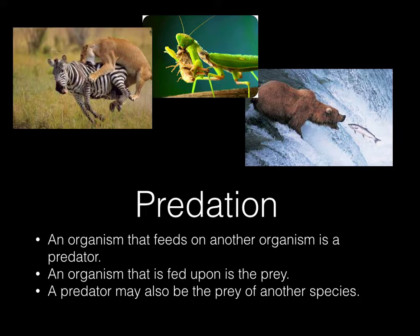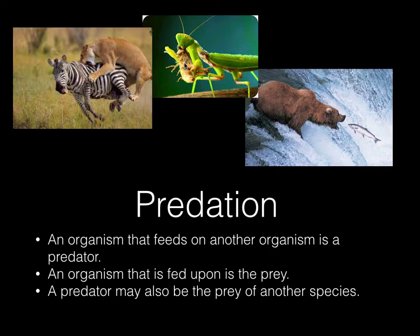Predation involves a predator and a prey. It's important to note that a predator can also be prey to another species, so this isn't a fixed label. Here we have a lion, which is an apex predator with little competition outside its own species — the lion is the predator, the zebra is the prey. Similarly, the bear is the predator and the salmon is the prey. Here a praying mantis is eating some sort of larva.